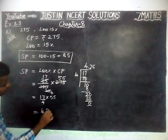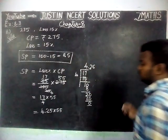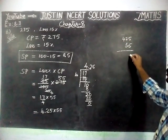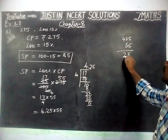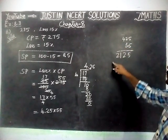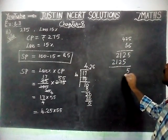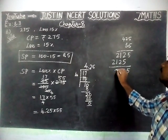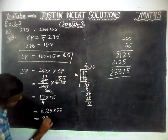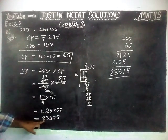So 17 divided by 4 equals 4.25 — in 17, four 4s are 16, remainder 1, then adding decimal: 10 divided by 4 gives 2 remainder 2, then 20 divided by 4 gives 5 remainder 0. So 17 by 4 is 4.25. Now multiplying 4.25 into 55: we get 2125 plus 2125 shifted, giving 23375. With 2 decimal places, that is 233.75.